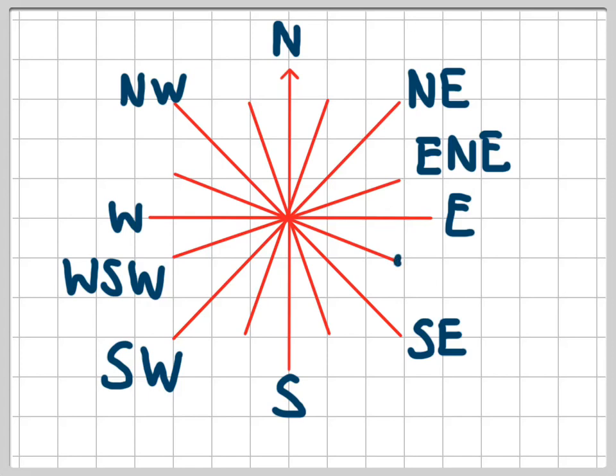So have a look at this point here and think what would the direction be for this point. It's between east and southeast. We put the major first, east, and the minor second, southeast. So if you wrote S-E-E, that was incorrect. You put the minor one first. It's going to be east-southeast.